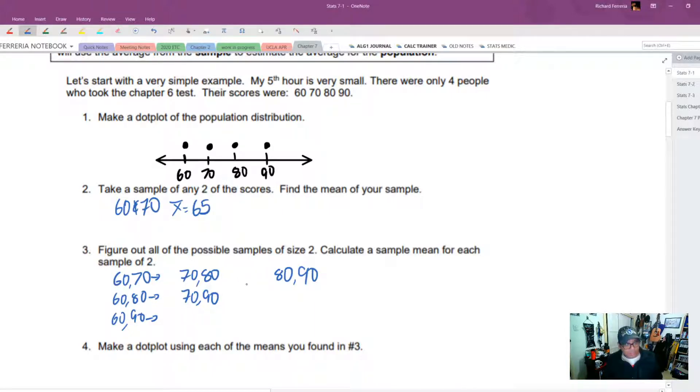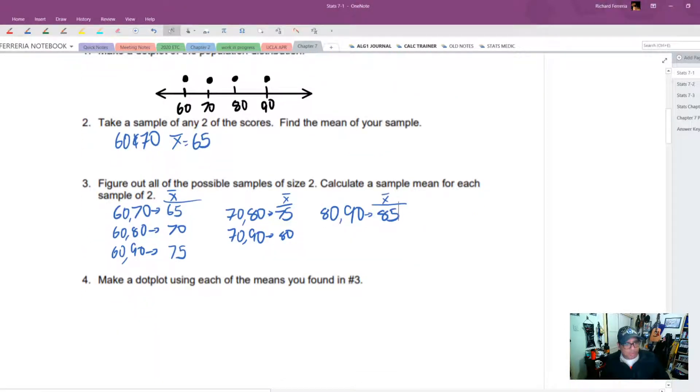Let's find the sample mean for each one of these. So the average of 60 and 80 is 70. 60 and 90, the average is 75. 70 and 80, the average is 75. And now we're going to make a dot plot of each of the means that we found in number three. So now we're going to take all of these x bars and make a dot plot for all the x bars. This is the distribution of x bars.